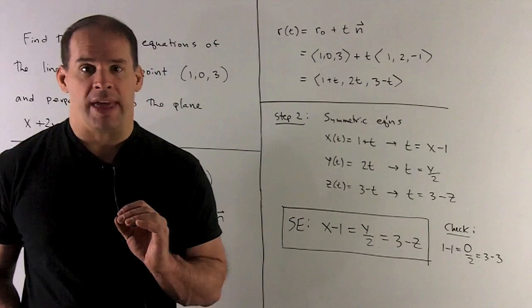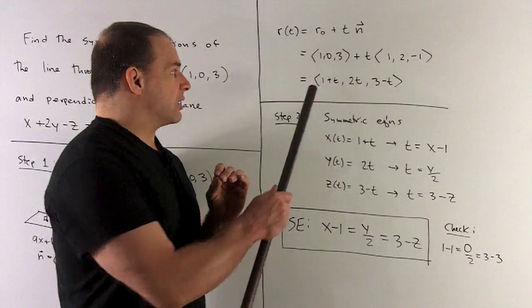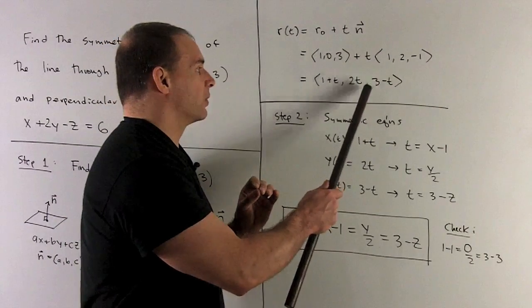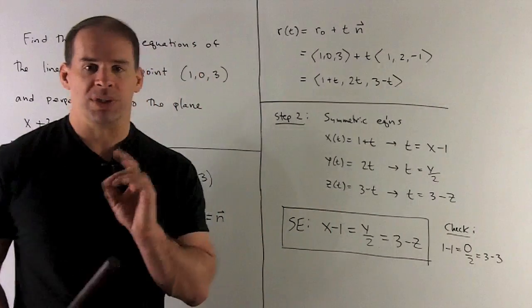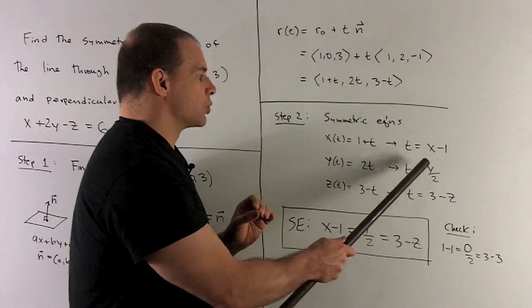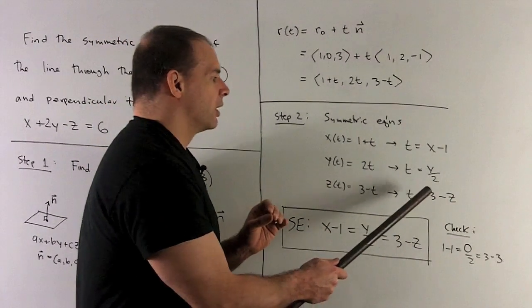Now, doing that, what do we have? I have x equals 1 plus t, y equals 2t, z equals 3 minus t. So we solve for each of those. Gives me t equals x minus 1, t equals y over 2, t equals 3 minus z.